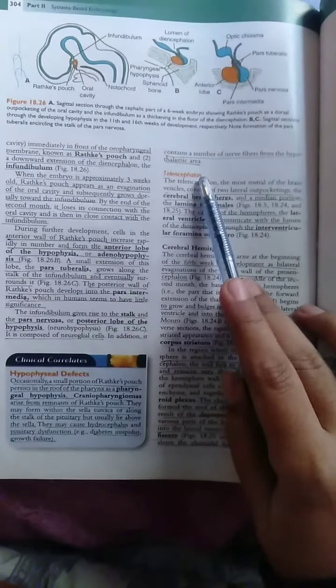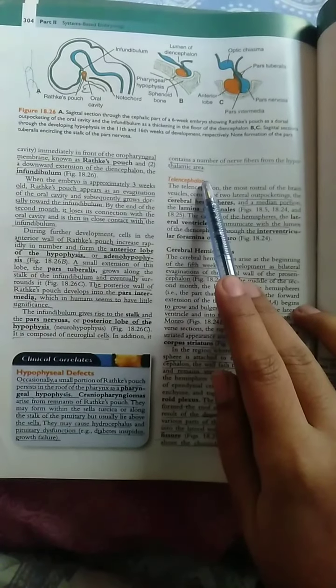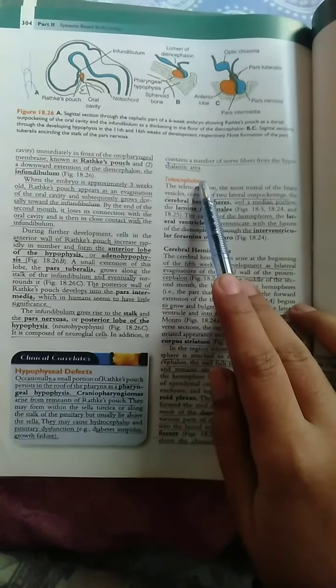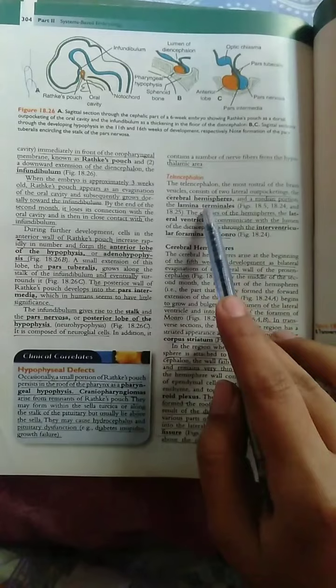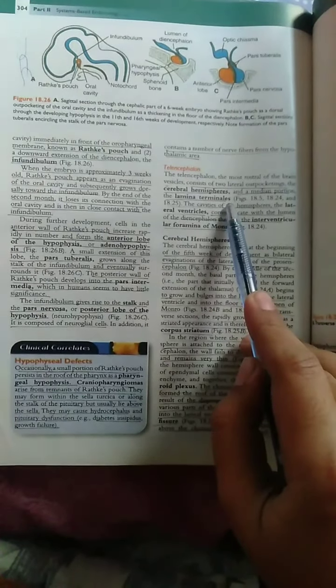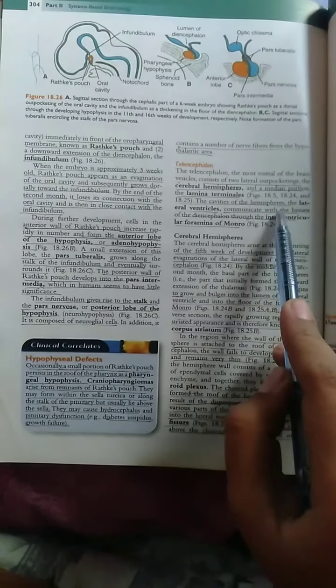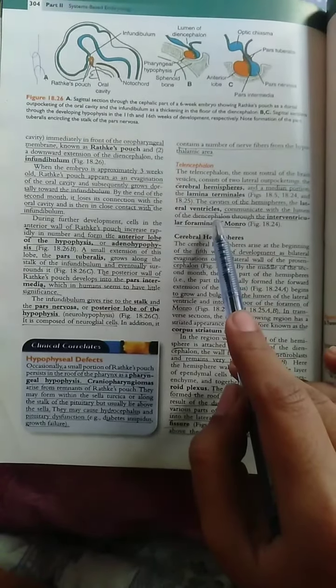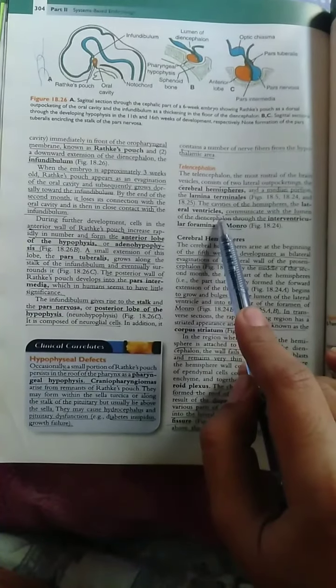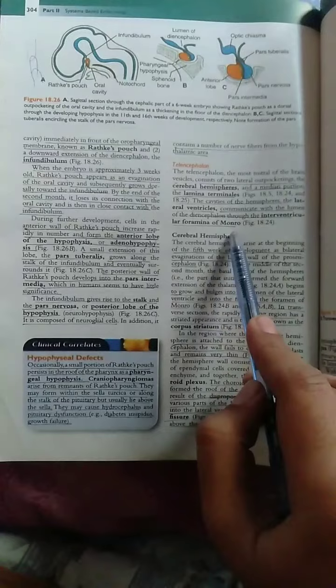Today's topic is the Telencephalon. The Telencephalon has two lateral outpocketings which we call cerebral hemispheres and one separating point which we call lamina terminalis. The cavity of the Telencephalon has a lateral ventricle and the cavity of the Diencephalon is the third ventricle. They communicate through the interventricular foramen of Monro.